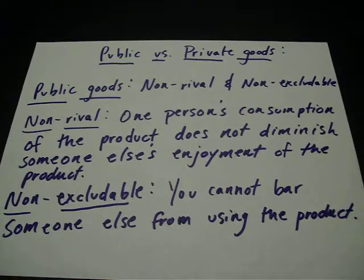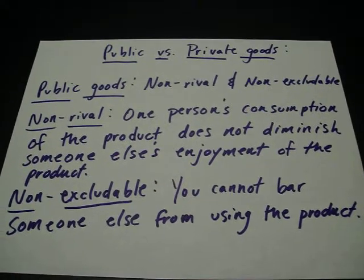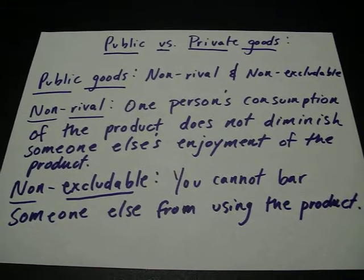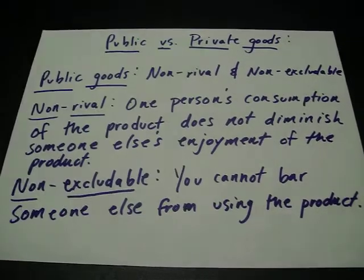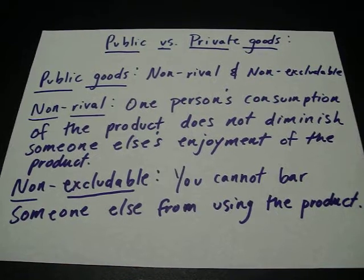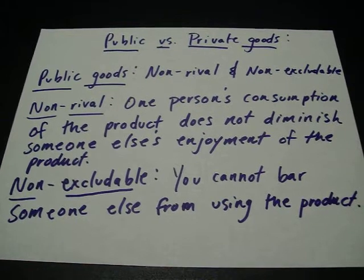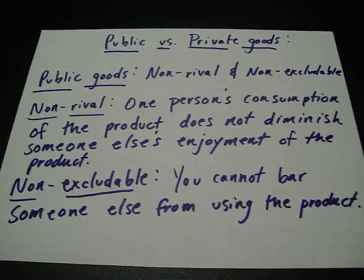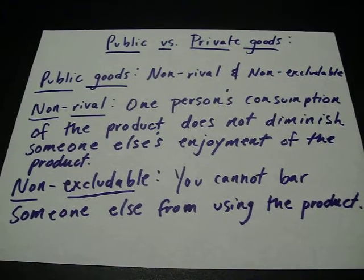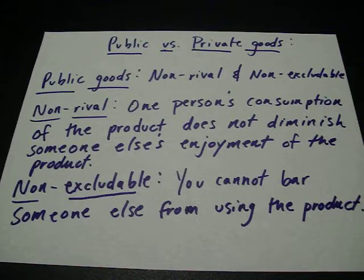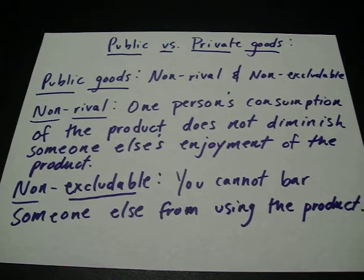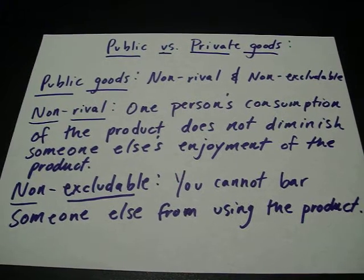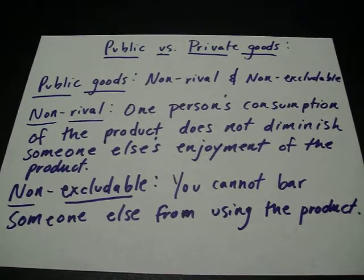Maybe 10% of the AP microeconomics test will be over public goods. Public goods are goods that are non-rival and non-excludable — those are the two characteristics. Non-rival means one person's consumption of the product does not diminish someone else's enjoyment of it. If I use it, it doesn't diminish the enjoyment that you get from consuming that same product. Non-excludable means you can't bar anybody else from using the product.